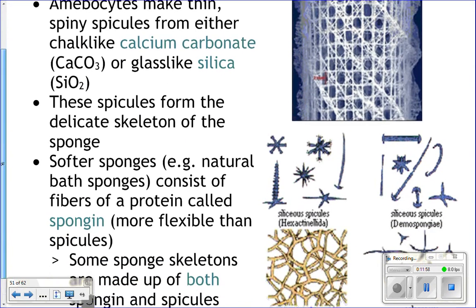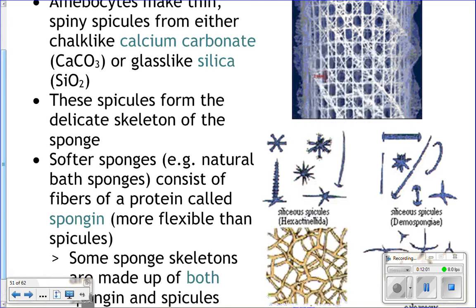Here are pictures of spicules — they can be made out of calcium carbonate or silica. Siliceous spicules are made out of silica, which is glass. There are even sponges called glass sponges because their spicules are made of silica. There are different shapes that spicules can be, and we actually use spicules to identify species — if you have an unknown sponge, you look at the spicules to figure out what species it is.